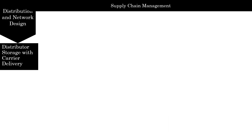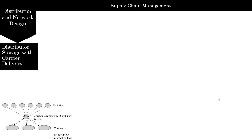Under distributor storage with carrier delivery, inventory is not held by manufacturers at factories but is held by distributors and retailers in intermediate warehouses, and package carriers are used to transport products from the intermediate location to the final customer. Amazon and industrial distributors like WW Grainger and McMaster-Carr have used this approach combined with drop shipping from a manufacturer or distributor. Information and product flows both go through the distributor.